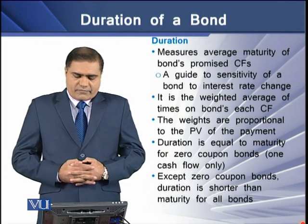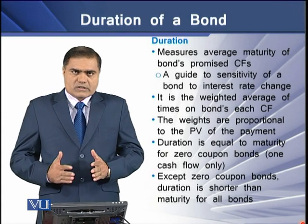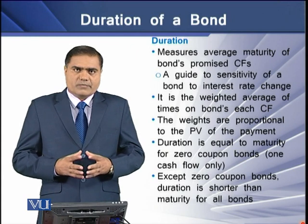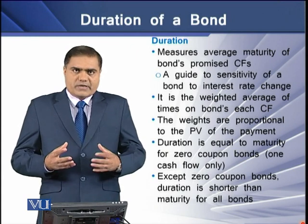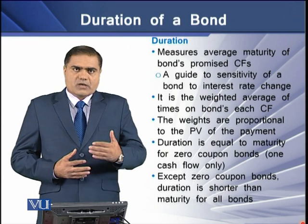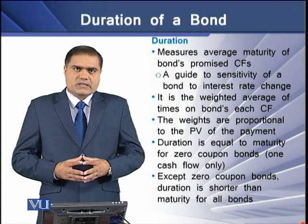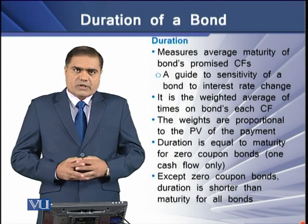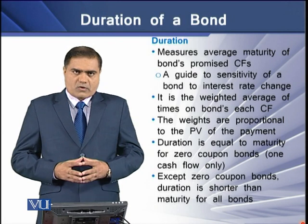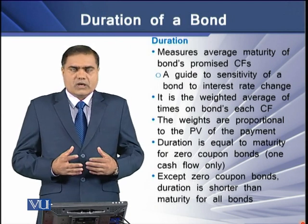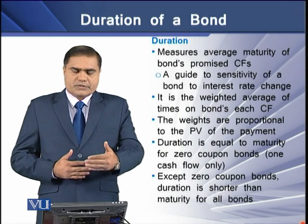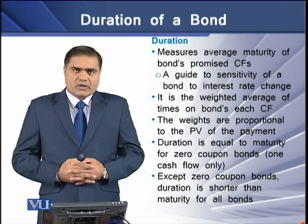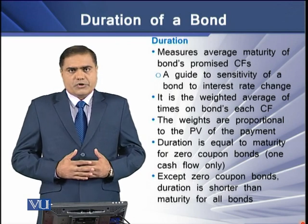Duration is the weighted average of time on the bond's cash flows, and these weights are the proportion of the present value of the individual payments of the bond as a whole, which is termed as the bond's fair market price. Duration is equal to the maturity for zero coupon bonds because there is only one cash flow occurring at the end of the bond. Except for zero coupon bonds, duration is shorter than the maturity of all other bonds.